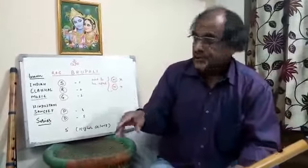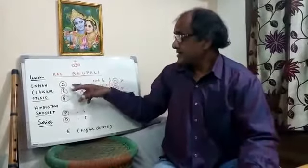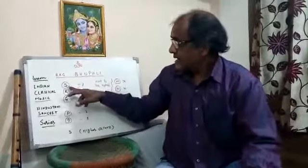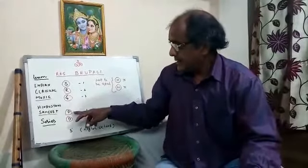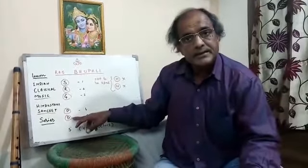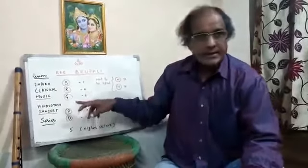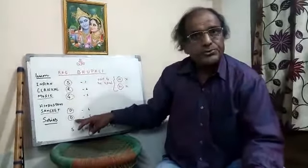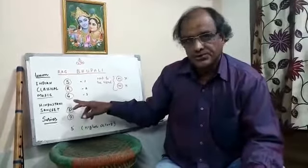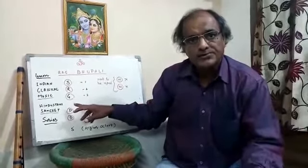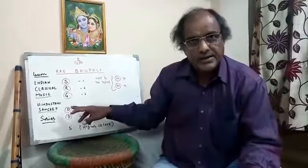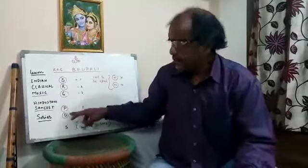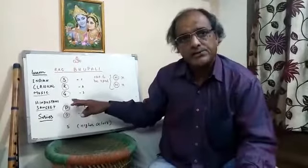This Rag consists of five notes: Sa, Re, Ga, Pa, Dha. All these five notes are Sudha Swars. No Komal Swar is used in this Rag. In Aroh and Avroh, only these five notes are used.